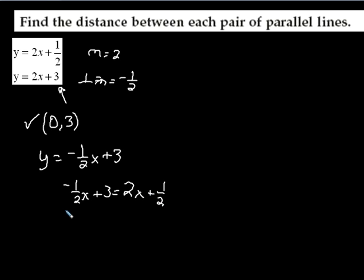Once again, before solving for x, I'm going to clear my fractions. My denominators are 2. I'm going to multiply everything by a 2. So I'm going to get negative 1x plus 6 equals 4x plus 1.